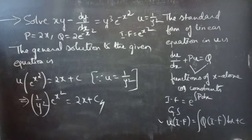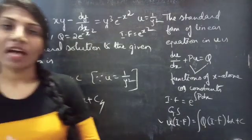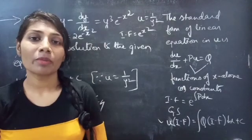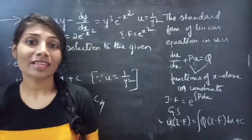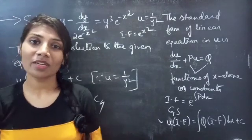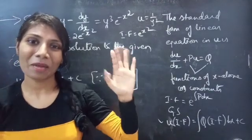Replacing u with 1/y², the solution becomes (1/y²)·e^(x²) = 2x + C, which is the required solution. We have solved a problem using Bernoulli's equation in this video. Hope you understand — see you in the next video. Bye bye.